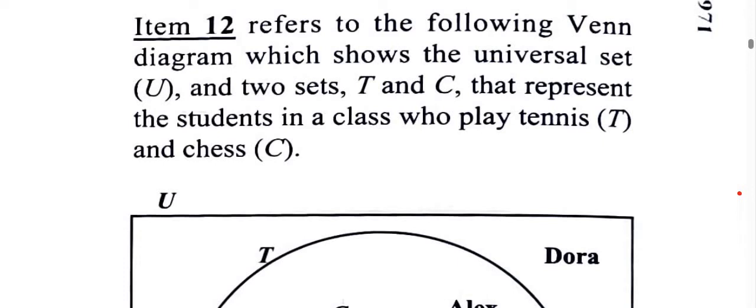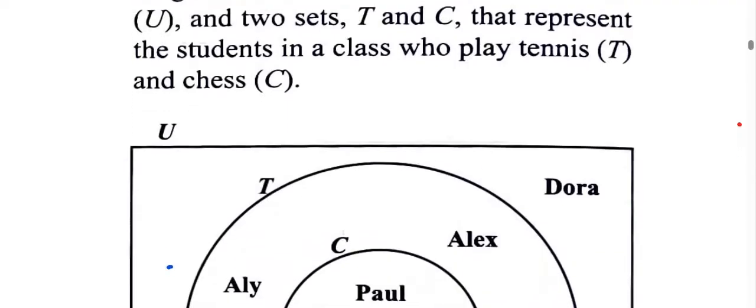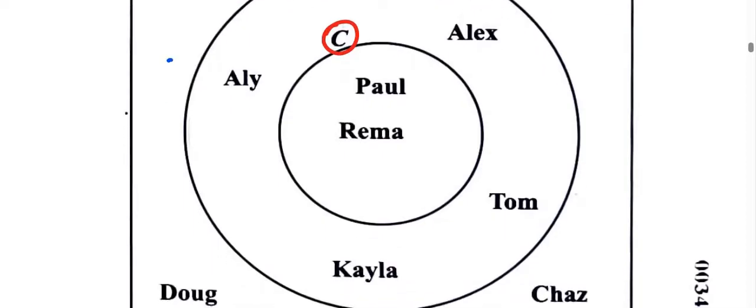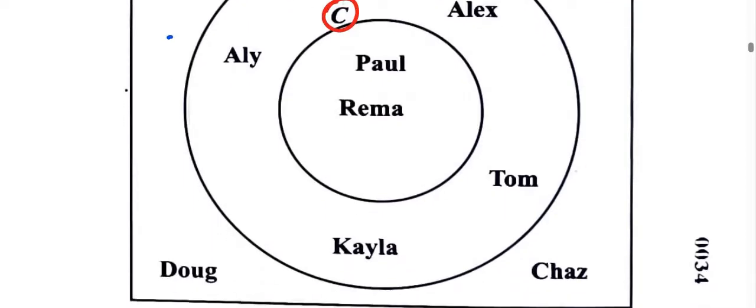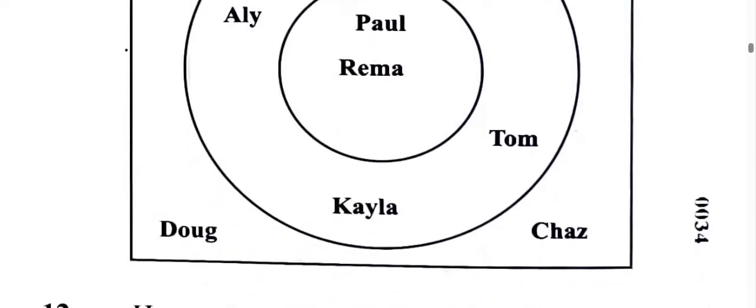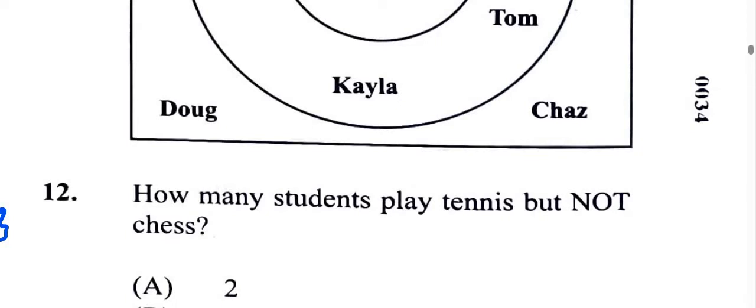For this item, you can read the statement. We're told that we have the universal set U, two sets T and C that represent students in the class who play tennis and chess. Let's get the universal set. We see Dora is outside of tennis and chess, meaning she doesn't play those sports. Let's take a look at what the question is asking us: how many students play tennis but not chess?